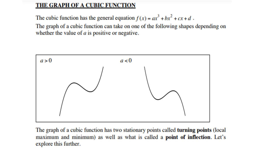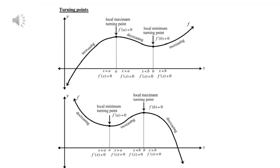The graph of a cubic function has two stationary points called turning points — local maximum and local minimum — as well as a point of inflection. Looking at the top graph, the derivative is greater than zero when the graph is increasing. Then you get the local maximum turning point where the derivative is zero, followed by a decreasing function where the derivative is less than zero. Then you get the second local turning point, the local minimum, and then again an increasing function. That is how the graph behaves when a is positive.